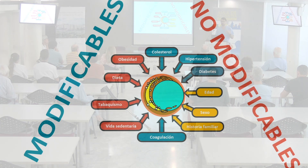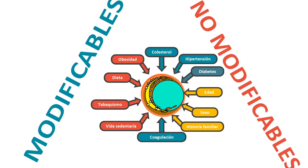Hay aspectos que nos conducen a estas enfermedades que son modificables, como la obesidad, la mala dieta, el tabaquismo y una vida sedentaria. Algunos que podemos modificar con fármacos, como el colesterol, la hipertensión y la diabetes.